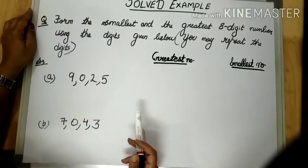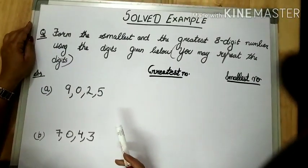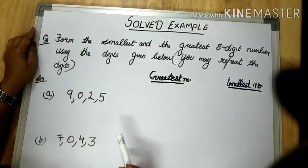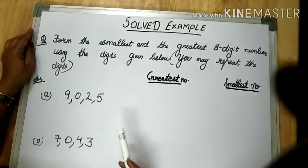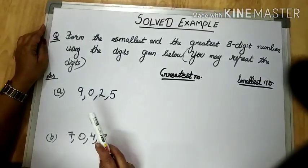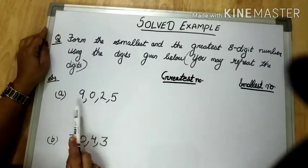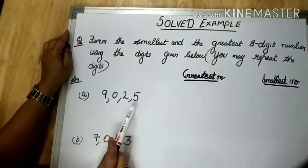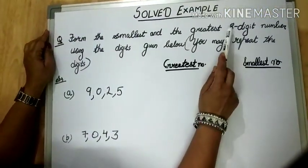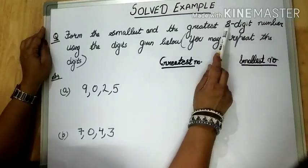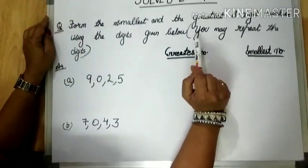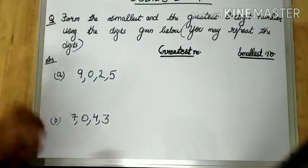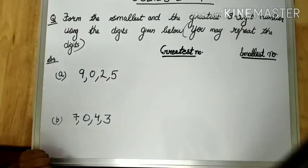Children, in this video I am telling you how to form the greatest and the smallest 8-digit number using the digits given below, and you may repeat the digits. That means the digits given are less. For example, only 4 digits are given and you have to form the 8-digit number. It is given that you can repeat the digits. So, how to form the greatest number and the smallest number using these digits?